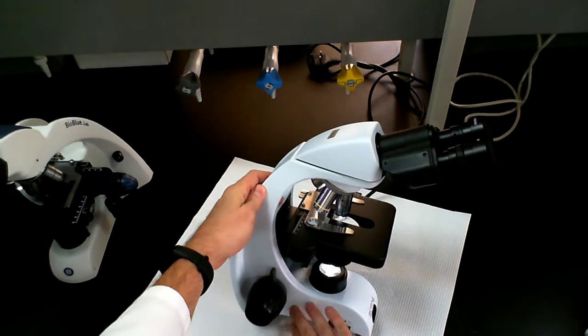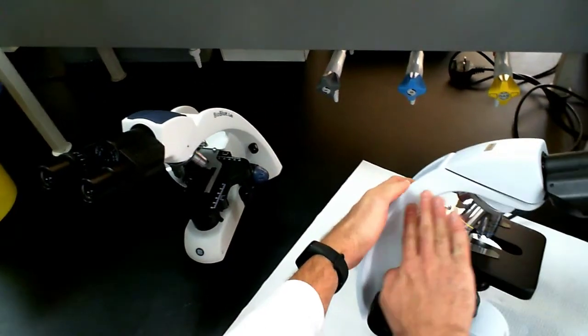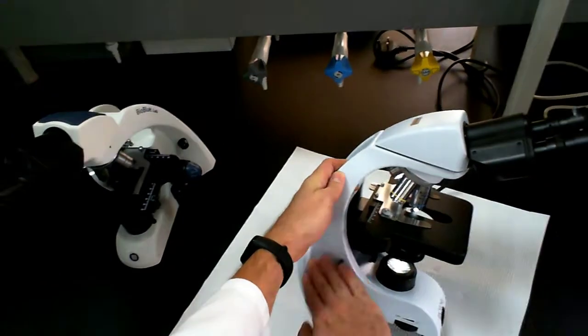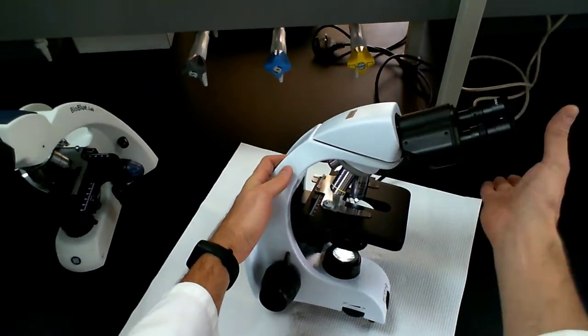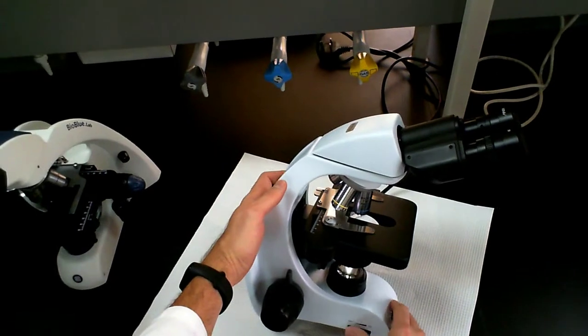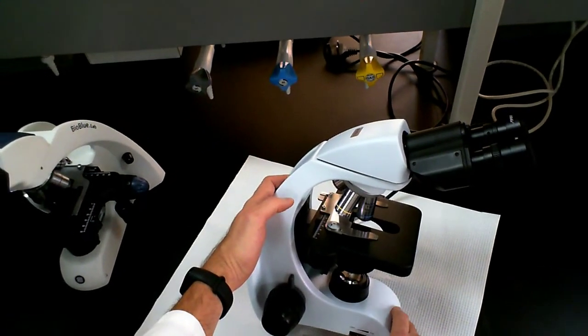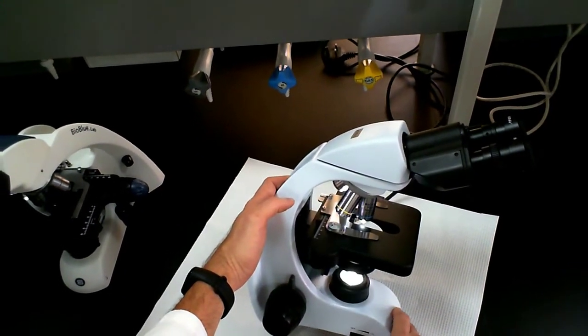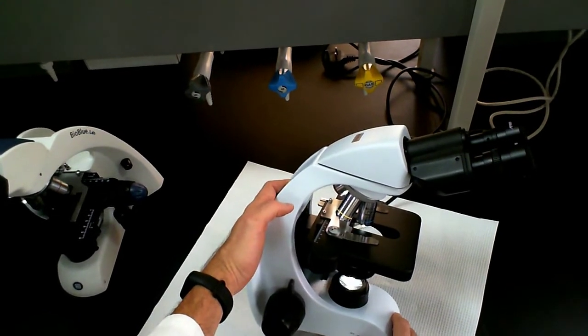So we have here is the base, the arm is where I'm holding this microscope right now, and the head of the microscope. So this is the head, the arm, and the base. At the base in this case we have a light switch, so this can turn on or off and also controls the intensity of the light.